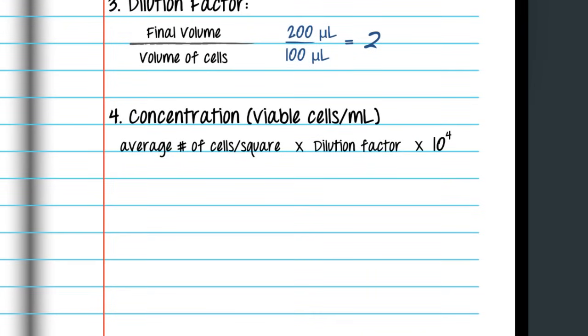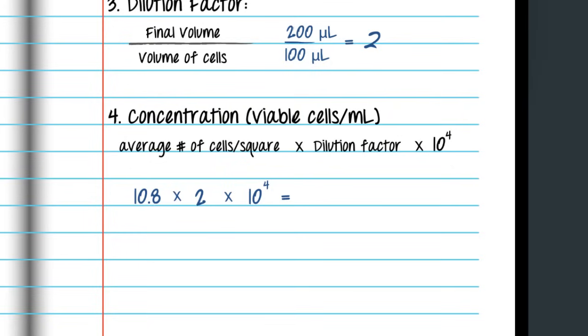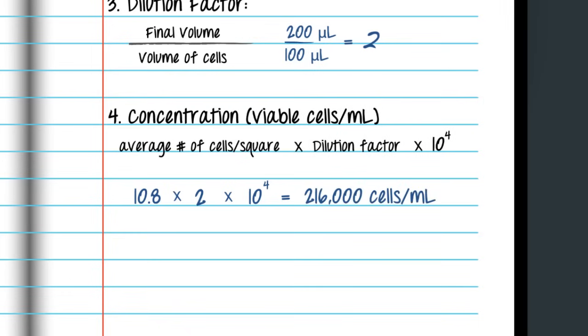Next, we need to calculate the concentration of viable cells, the number of living cells per milliliter. Our average count per square is 10.8. The dilution factor is 2. 10.8 times 2 times 10 to the 4th power equals 216,000 cells per milliliter. We can write the concentration using scientific notation as 2.16 times 10 to the 5th power cells per milliliter.